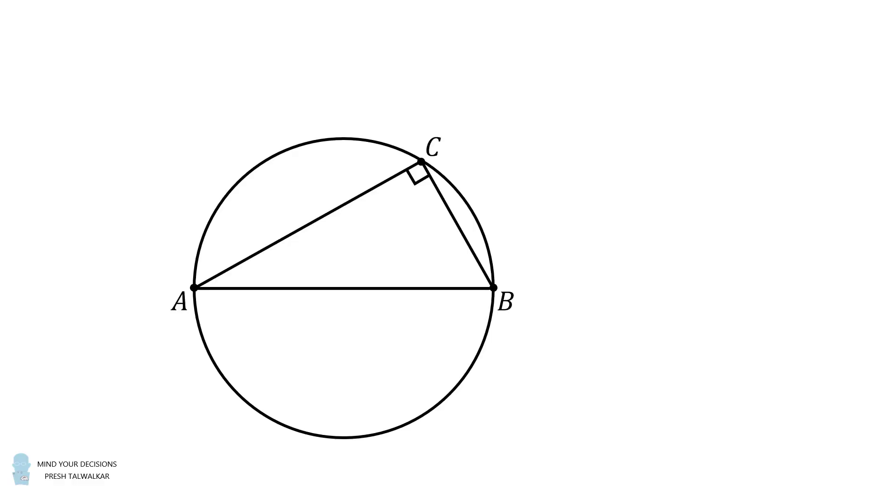Now let's take some other point F along this same semicircle. We will connect AF and FB. By the same logic, angle AFB is an inscribed angle in a semicircle, so it is a 90 degree right angle.